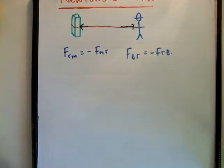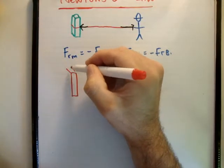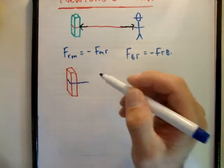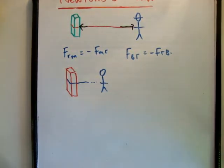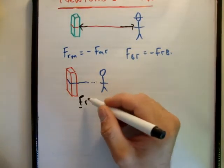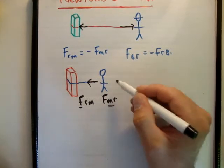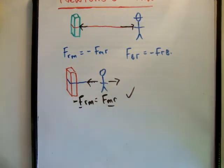Let's draw this again. We have our block, our rope drawn in blue, and our man pulling the rope. What about the force of the rope on the man — that's going in this direction — and the force of the man on the rope, going in the opposite direction because the man is trying to pull it. Is that a Newton's Third Law pair? The answer is yes. They are equal in magnitude, and that is a Newton's Third Law pair. But remember, when summing your overall forces, you've got to take this into account.